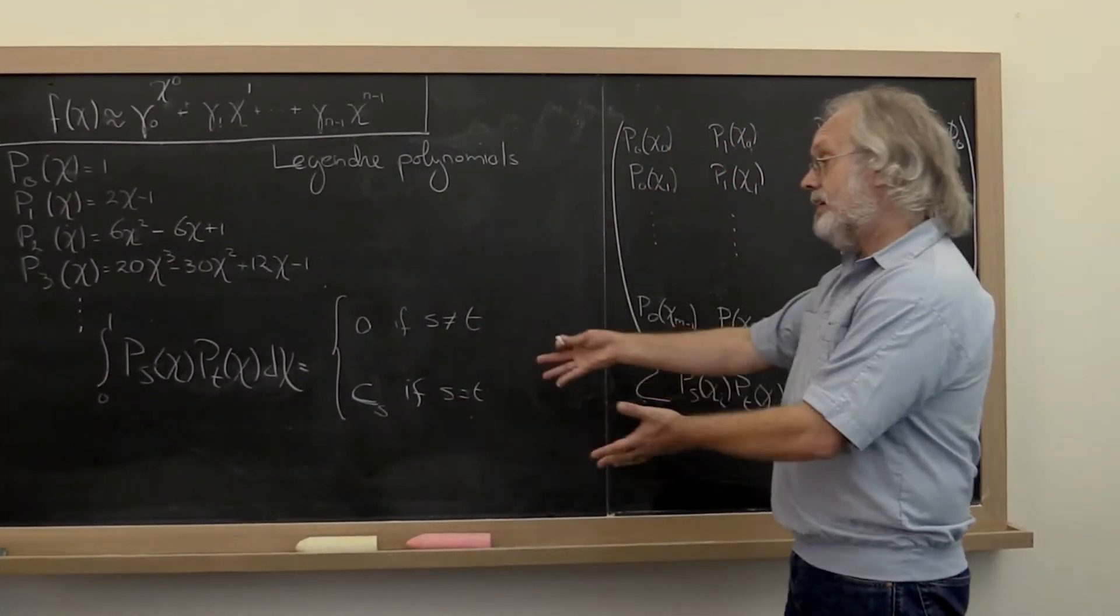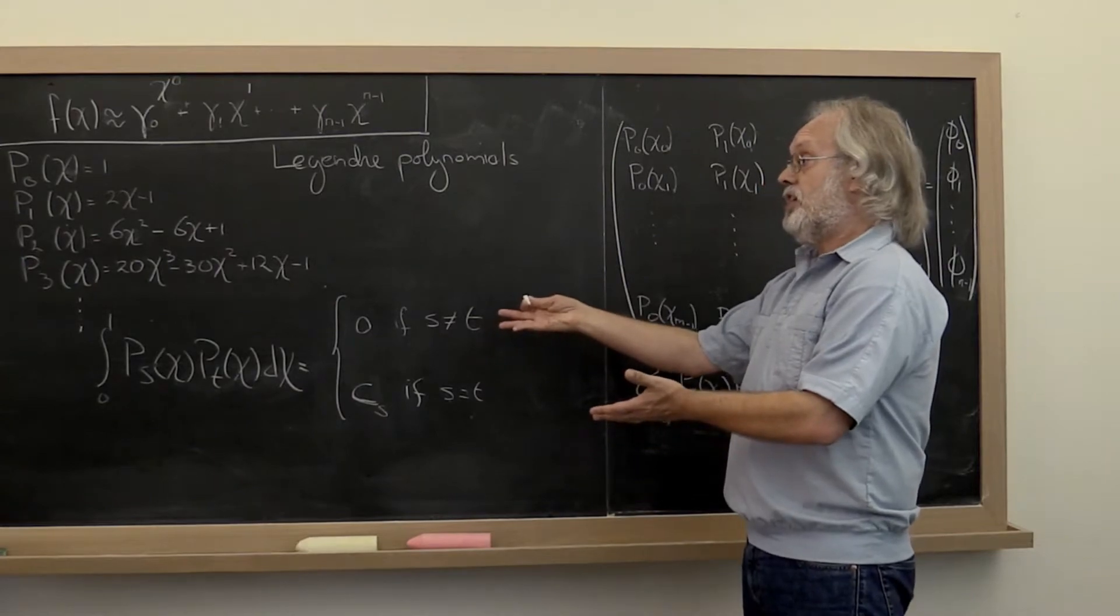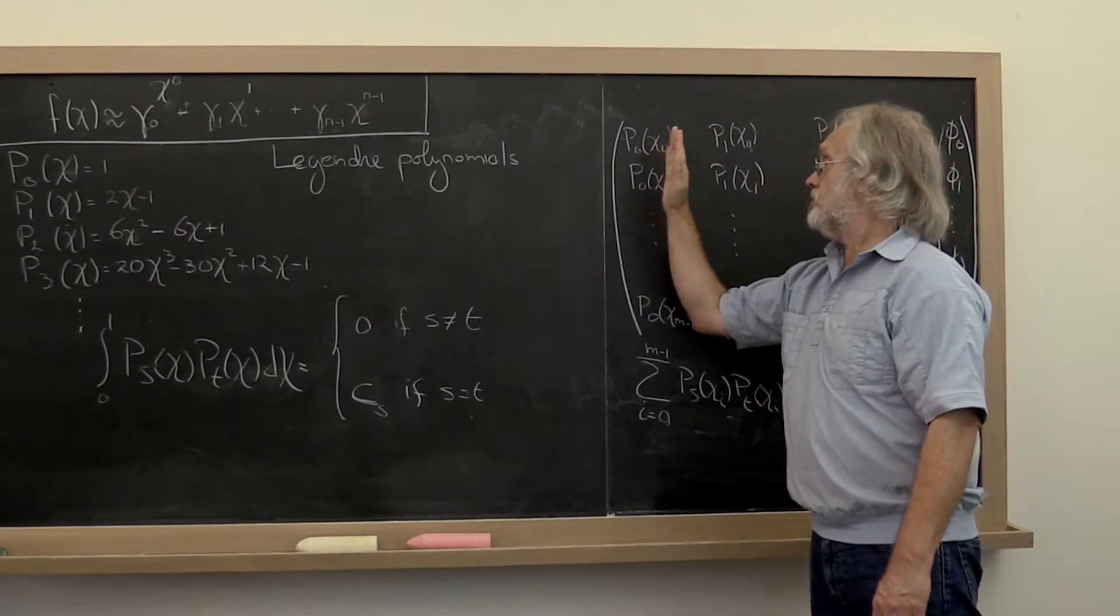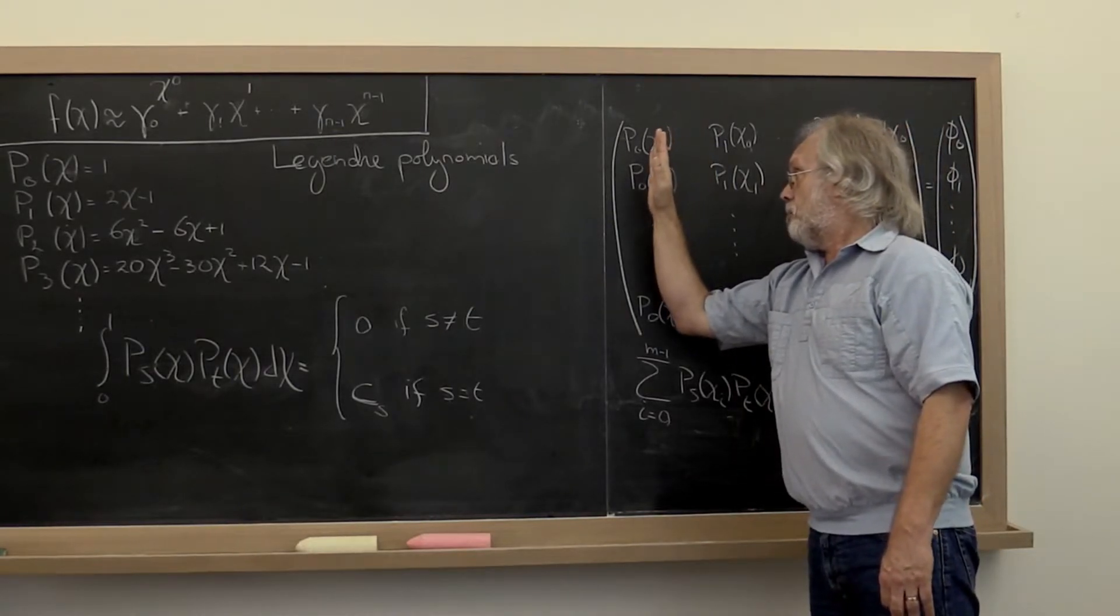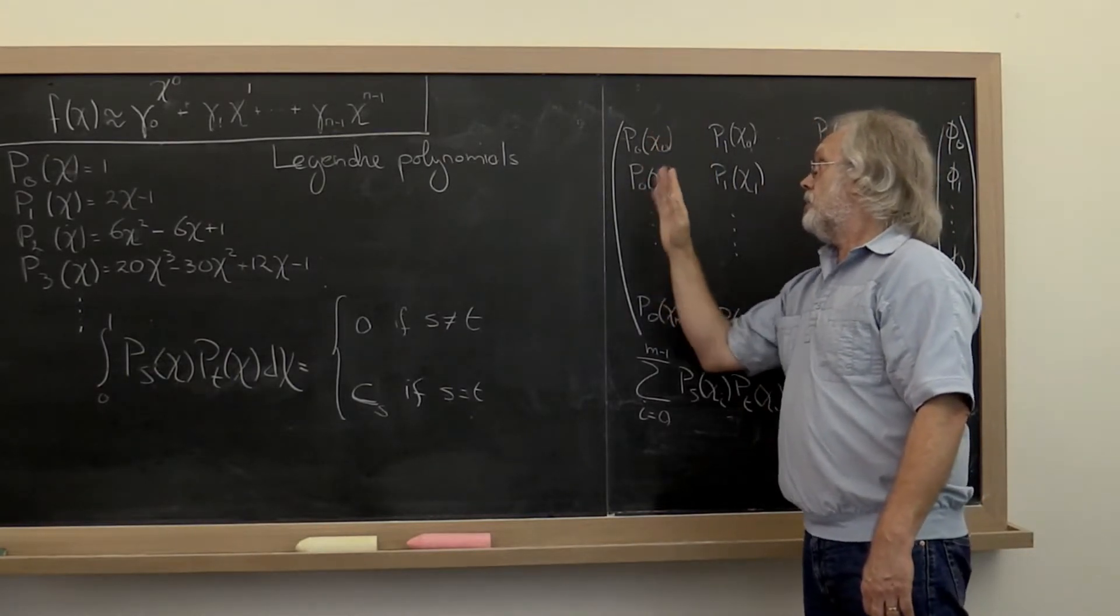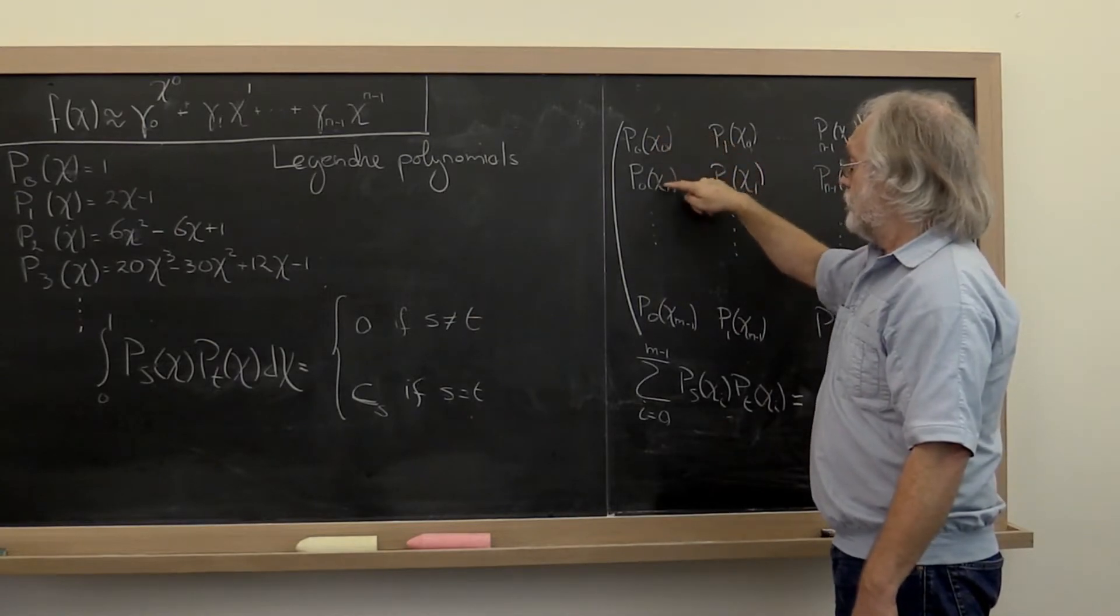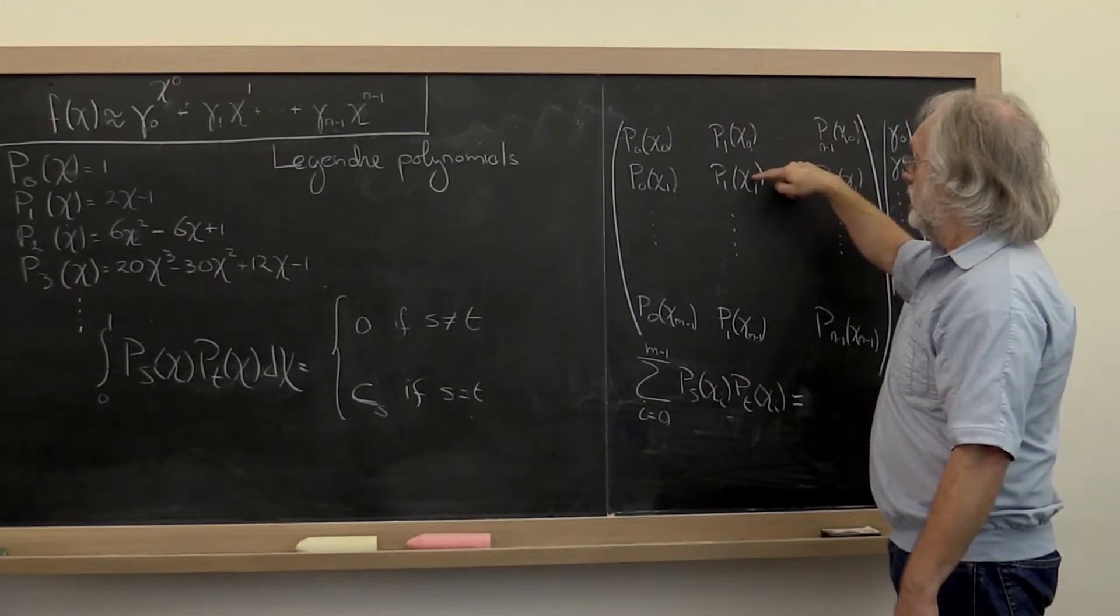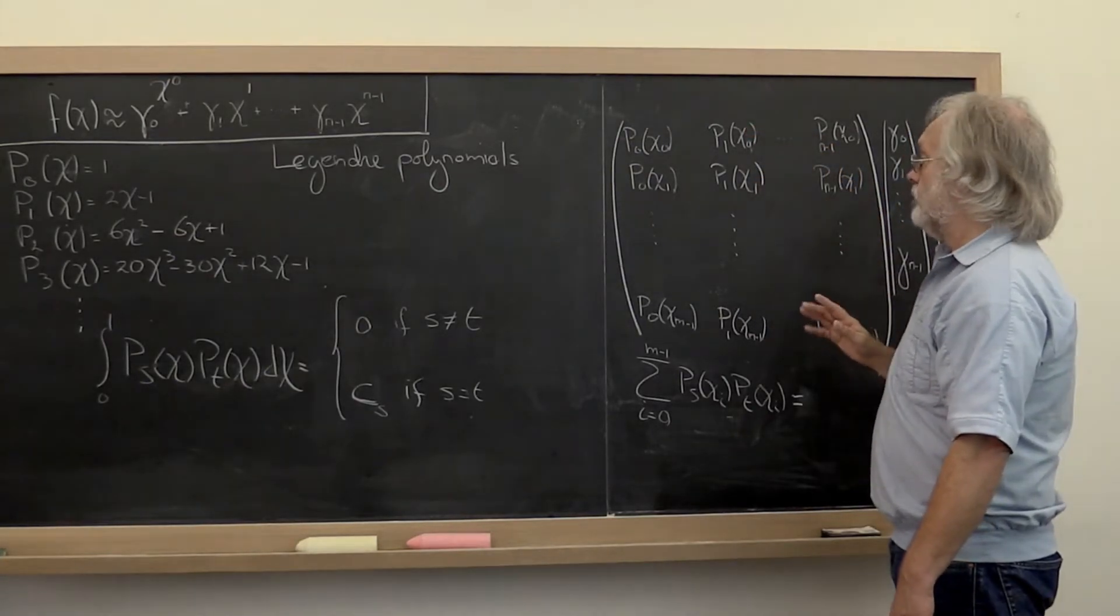So what you can then do is do the exact same thing that we did before, which is create a matrix with as its columns the polynomial of degree 0 evaluated at chi 0, chi 1, and so forth, and then the polynomial of degree 1 evaluated at chi 0, chi 1, and so forth.